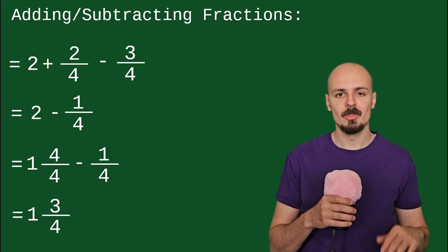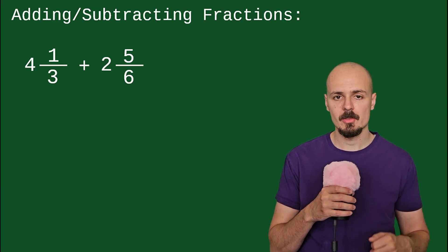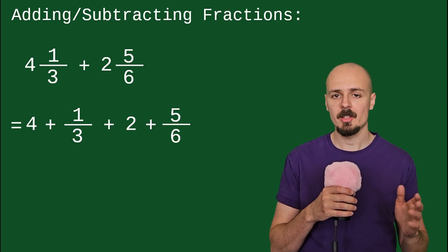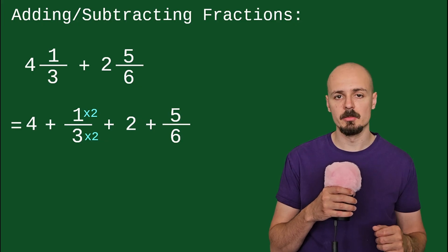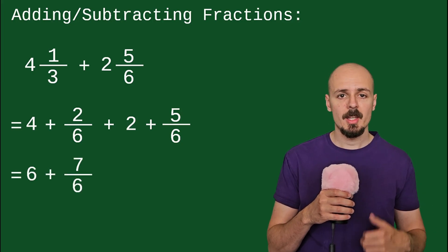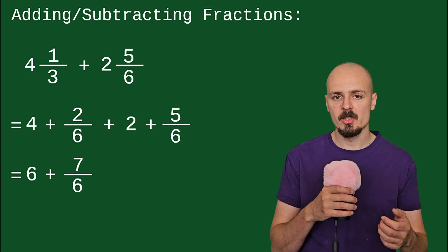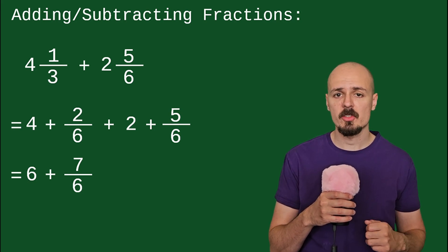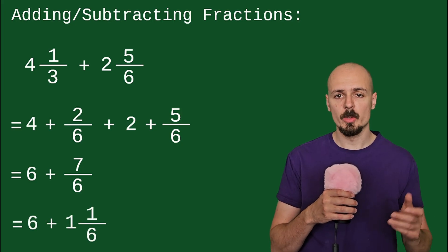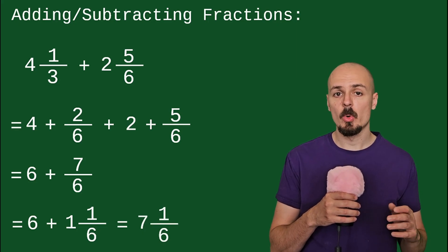Let's jump into another example: 4 and 1 third plus 2 and 5 over 6. Let's split these up. Looking at the denominators, we can multiply the numbers in the first fraction by 2 to get a common denominator of 6. Adding the whole numbers and fractions at the same time gives us 6 plus 7 over 6. This is interesting because 7 over 6 is an improper fraction — the numerator is bigger than the denominator — so we should convert it. 7 over 6 becomes 1 and 1 over 6, and adding that to 6 gives us 7 and 1 over 6.